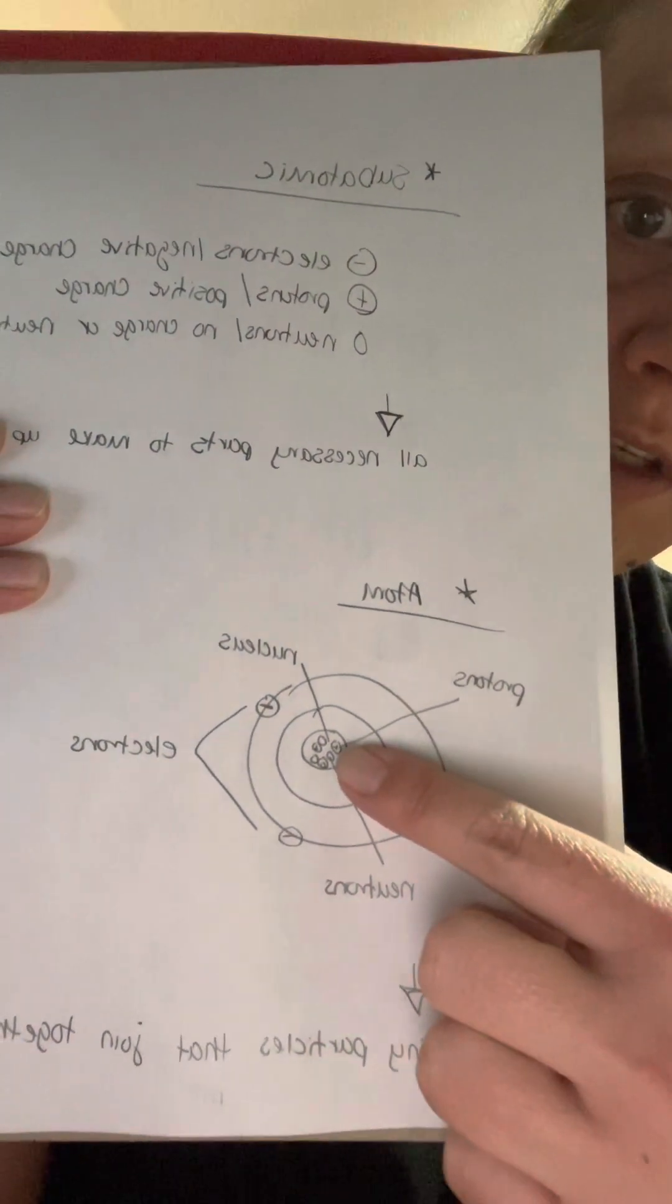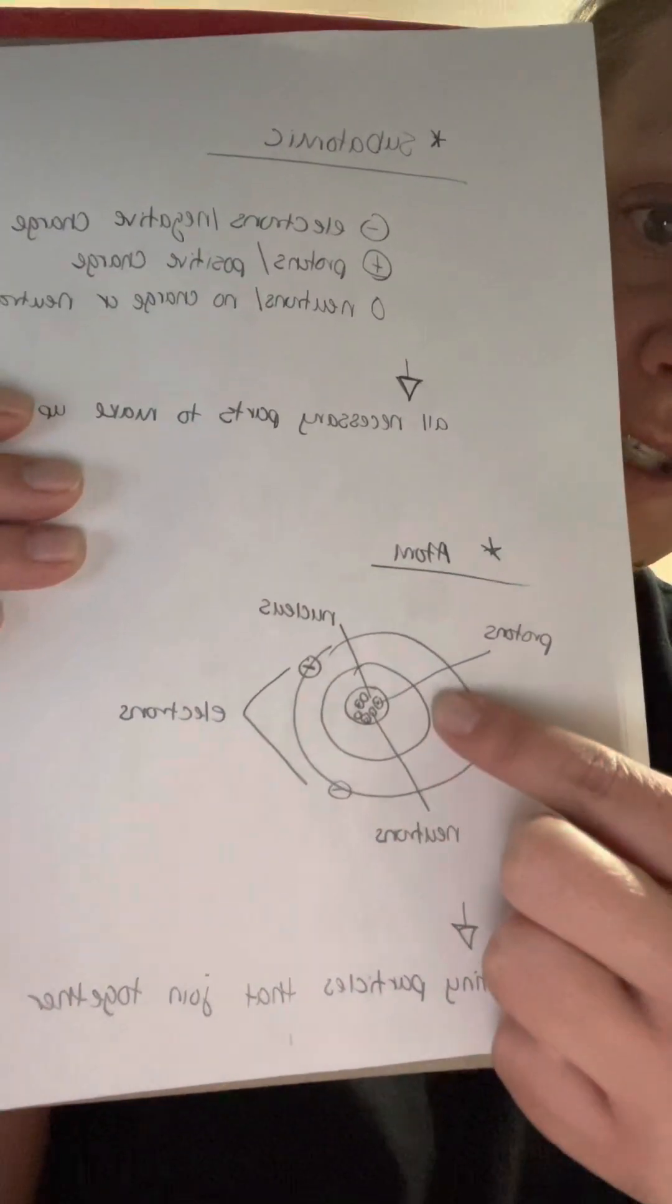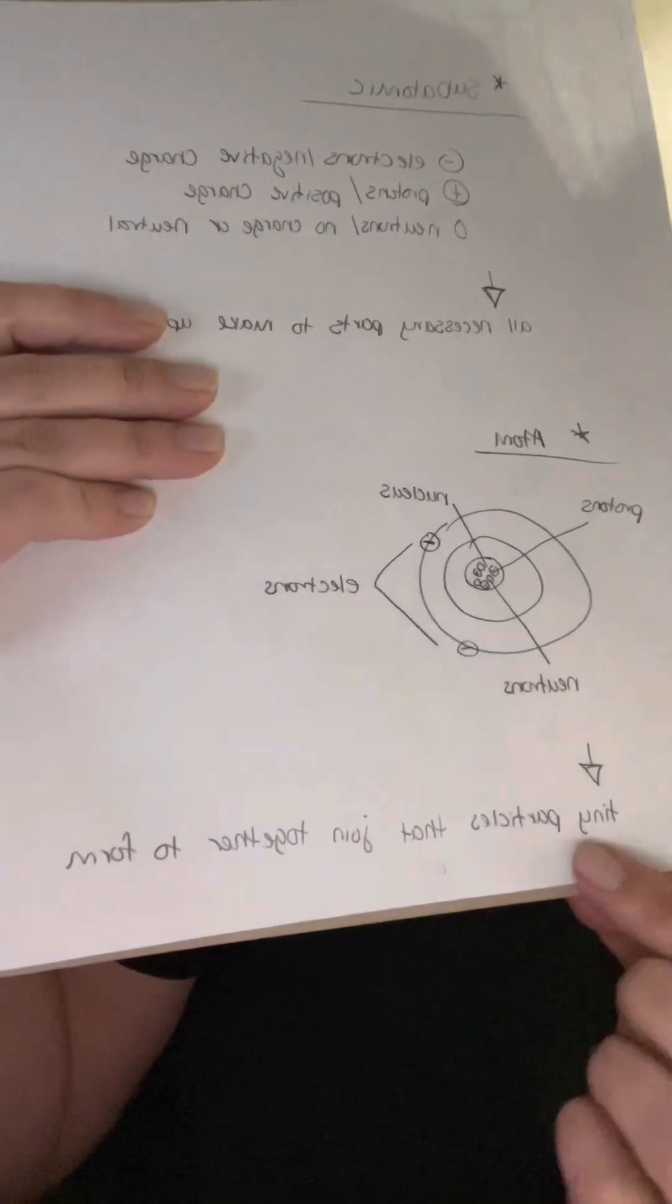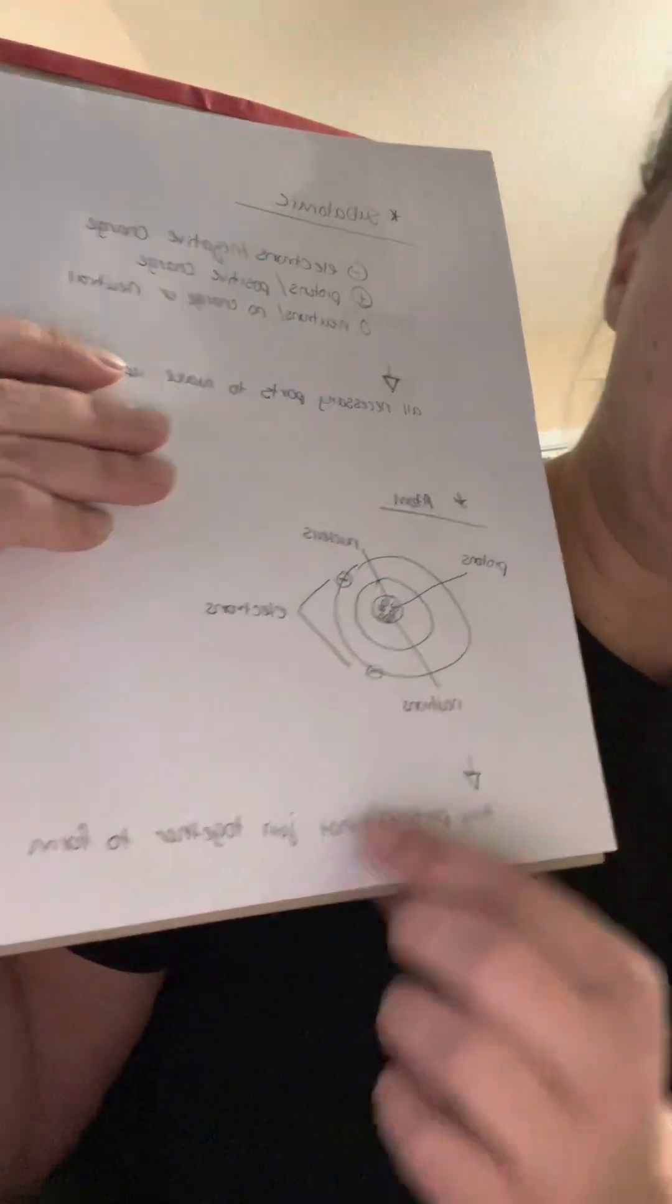We have protons and neutrons inside of the nucleus, and electrons around the outside. These tiny particles join together to form molecules.